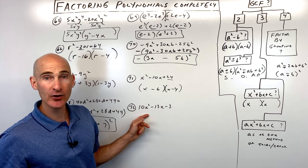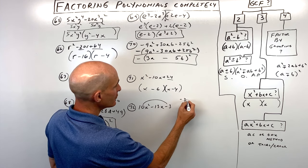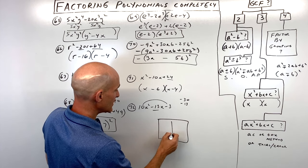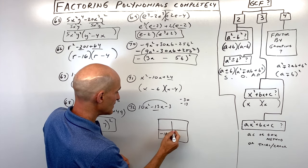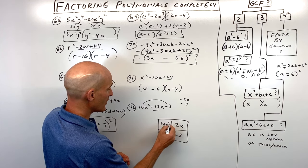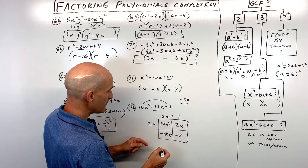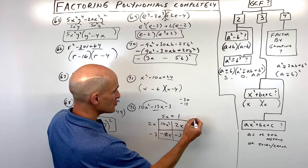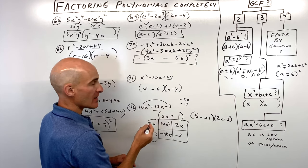Number seventy-two is a trinomial with leading coefficient not 1 and no greatest common factor. Using the box method: what multiplies to negative 30 but adds to negative 13? That's negative 15 and positive 2. Draw a box with 10x squared and negative 3 in the diagonal corners, and negative 15x and 2x in the other cells. Factor out 2x from the first row, giving 5x plus 1. Factor out negative 3 from the second row — double check: that gives negative 15x and negative 3. So the two factors are 5x plus 1 and 2x minus 3.